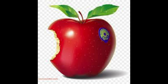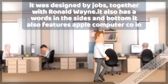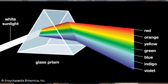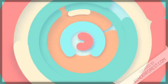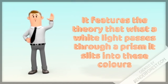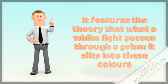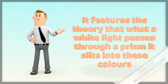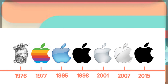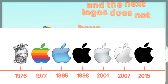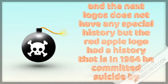The next Apple logo was colorful, in the shape of the current Apple logo — the bitten apple. It features the theory that when white light is passed through a prism, it splits into multiple colors, and those are the colors represented in this Apple logo. The following logo after that had no big theory behind it.